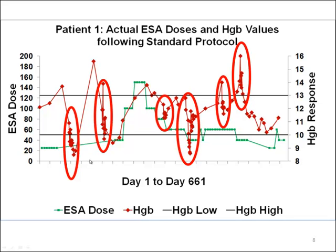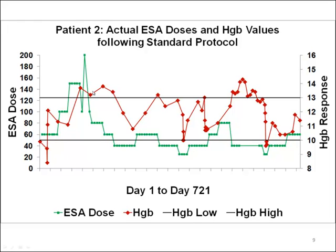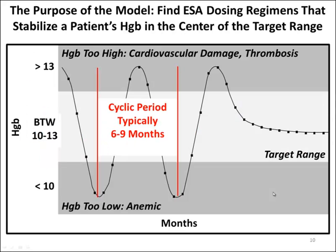Patient two, same structure of the chart. We see hemoglobin values again following a cyclic oscillation, and we see the kind of wild variations in ESA dosing. In general and idealized, what we observed was a hemoglobin cycling in these patients where the period was about six to nine months. When the hemoglobin is too high, there's cardiovascular damage, a risk of clotting and thrombosis, an increased risk of stroke. When the hemoglobin is too low, the patient is feeling anemic. Typically, providers would measure hemoglobin one time per month and look at the previous month but not look back at the pattern on a behavior-over-time chart. So this cyclic variation was just undetectable, undetected for many of the providers.